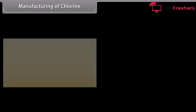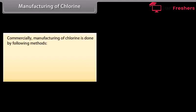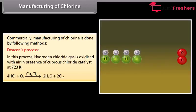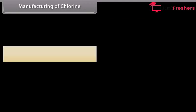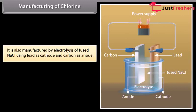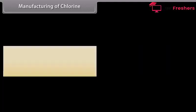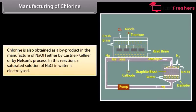Commercially, manufacturing of chlorine is done by the following methods. In Deacon's process, HCl is oxidized with air in the presence of cuprous chloride catalyst at 723 Kelvin. It is also manufactured by electrolysis of fused NaCl using lead as cathode and carbon as anode. Chlorine is also obtained as a by-product in the manufacture of NaOH either by the Castner-Kellner or Nelson's process, in which a saturated solution of NaCl in water is electrolyzed.